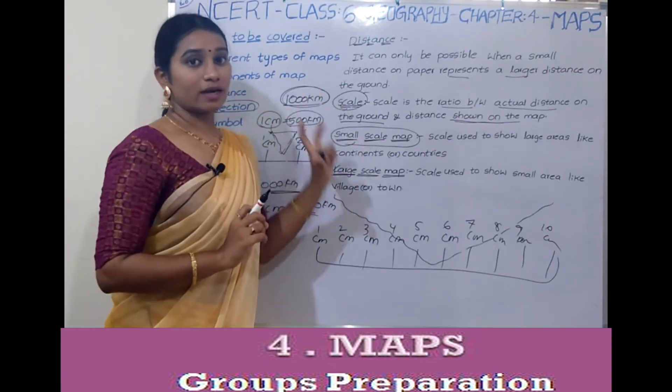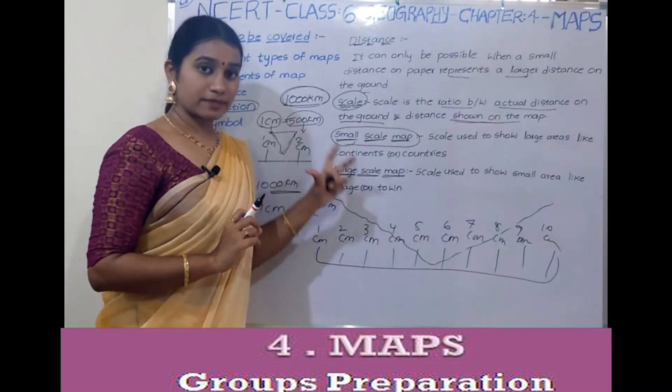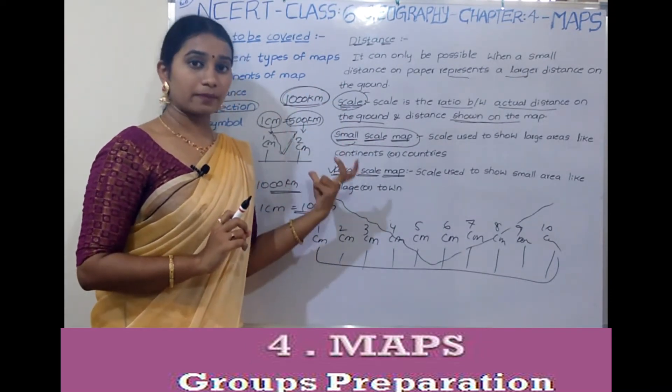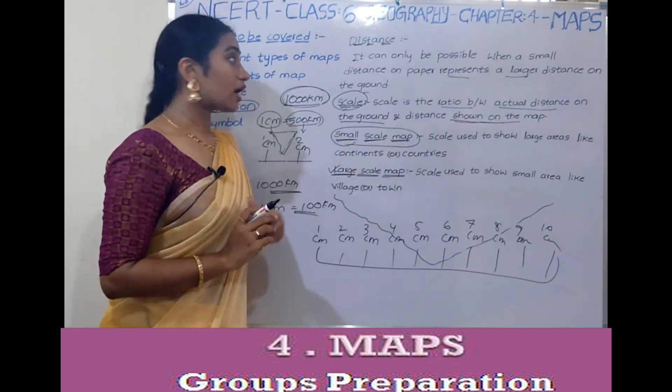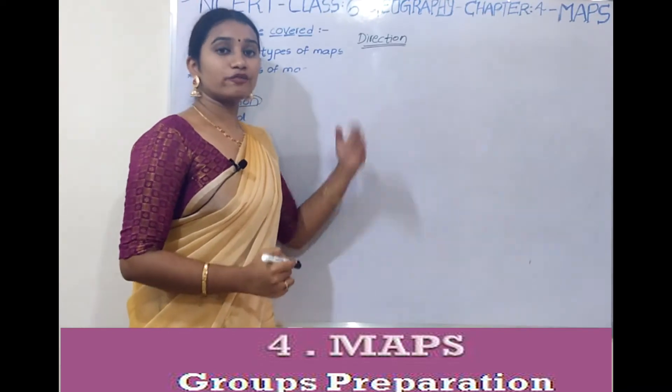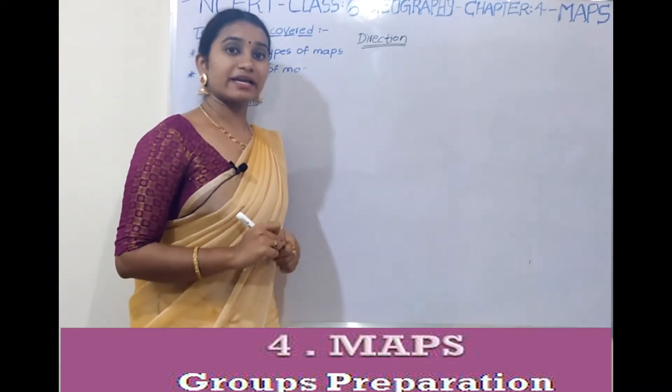This is the difference between large-scale and small-scale maps, as well as how we represent distance. The second component of the map is direction.